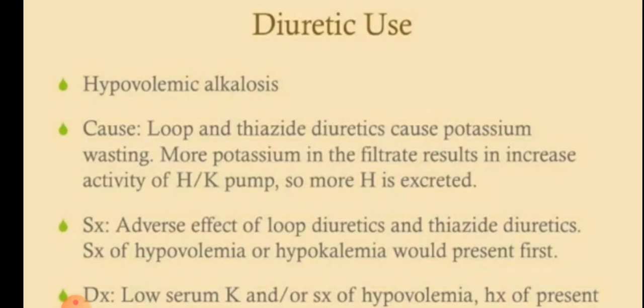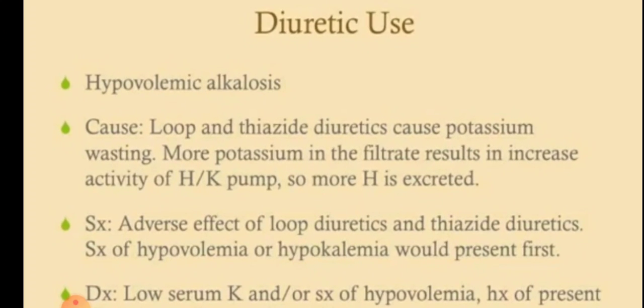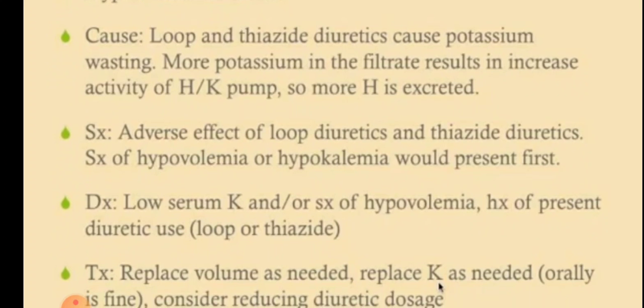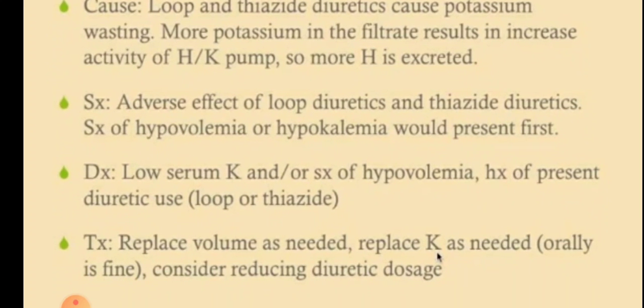Good evening doctors. Welcome again. Today we are going to discuss diuretic use which causes hypovolemic alkalosis. Loop and thiazide diuretics cause potassium wasting — more potassium is filtered, resulting in increased activity of the hydrogen and potassium pump, so more hydrogen ions are excreted.